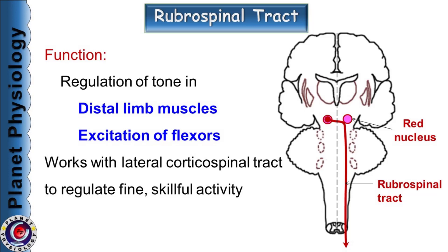In humans, the rubrospinal tract extends only up to the third cervical segment. It is excitatory to flexor muscles of the distal limb, meaning it stimulates the activity of flexors of the distal limbs. Thus, it is concerned with regulation of fine skillful activities, similar to the lateral corticospinal tract.